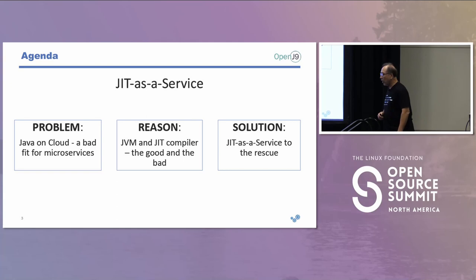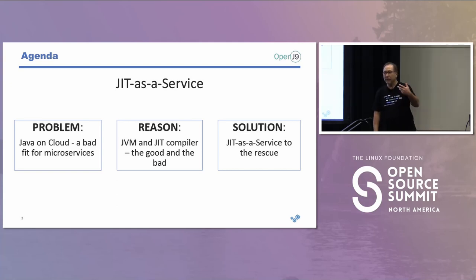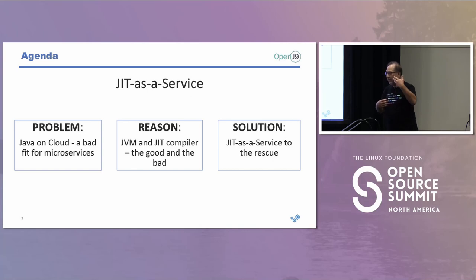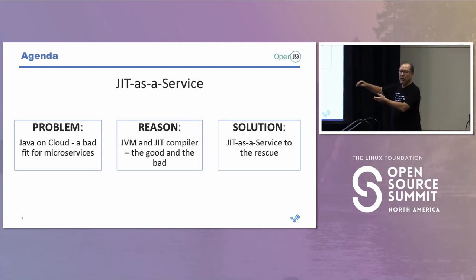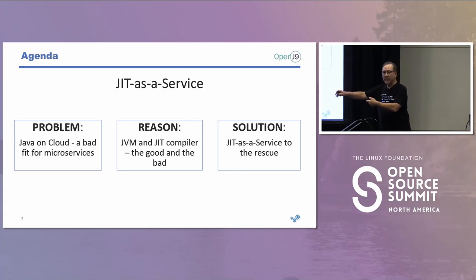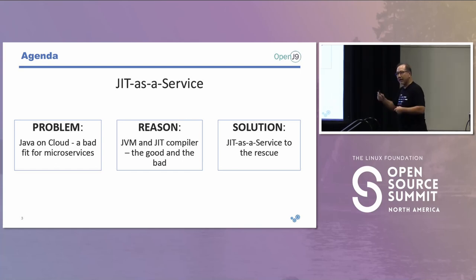We all understand Java, the underlying JVM, and how the JIT works. Java code is sent to the JVM for execution; the JVM uses the JIT to compile code in an optimized way, and as time goes on your code is optimized and runs better and better. That's the theory.